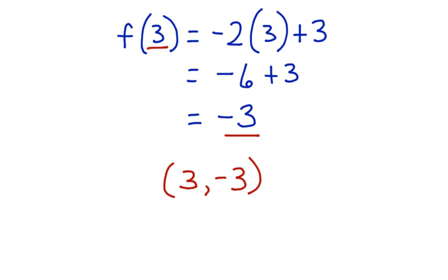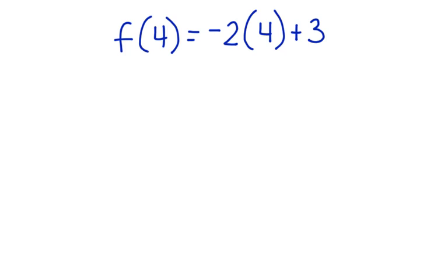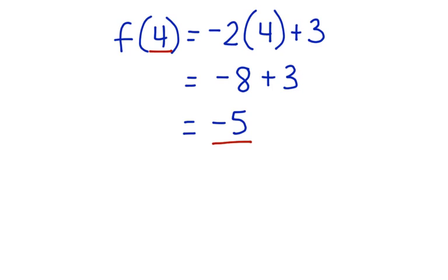Now let's look at finding the function of 4. We have the function of 4 is equal to negative 2 times 4 plus 3. We have negative 8 plus 3 on the right side of the equation, and we end up with negative 5. Once again, we have an x value and a y value, so we end up with the ordered pair (4, negative 5). Now if we were going to graph this function, these three ordered pairs would be solutions for the equation, and we could graph them on the coordinate grid.